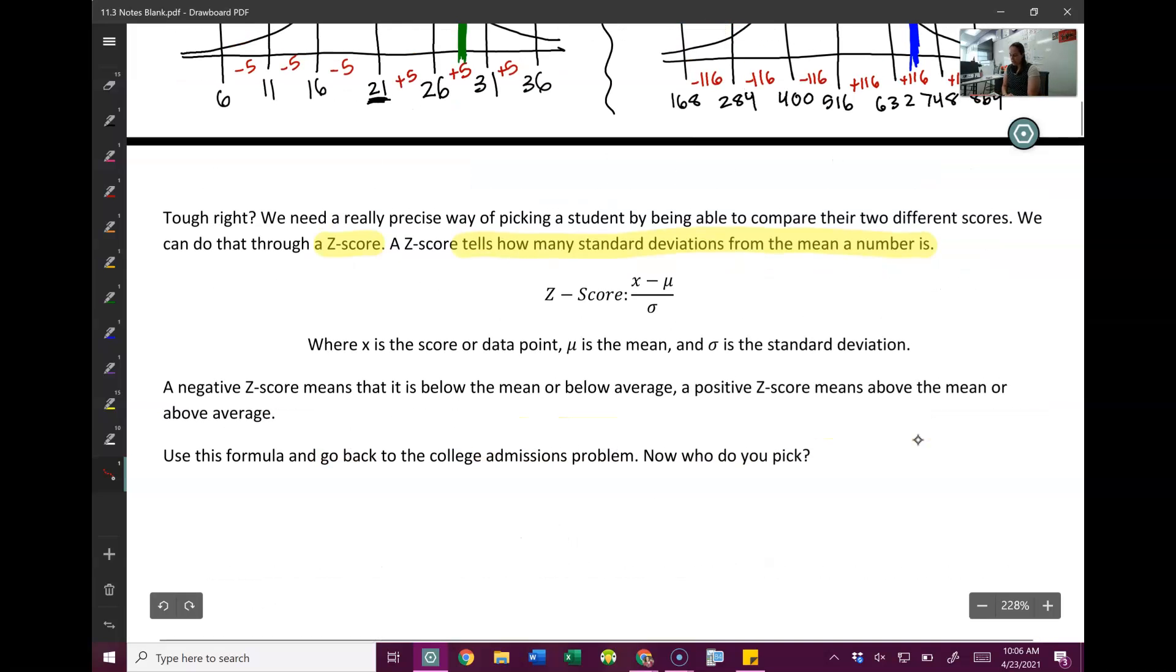So here's our z-score equation. Let me explain what each of these mean. X is the score or the data point. Mu is the mean, like we've learned. Sigma is the standard deviation.